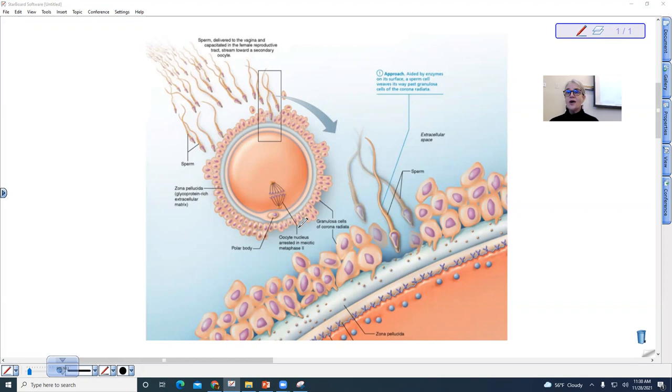So it is actually arrested in meiotic metaphase II. So that meiosis II is not going to be completed until the sperm fertilize the egg. We also see this, another barrier around the oocyte, which is called the zona pellucida.